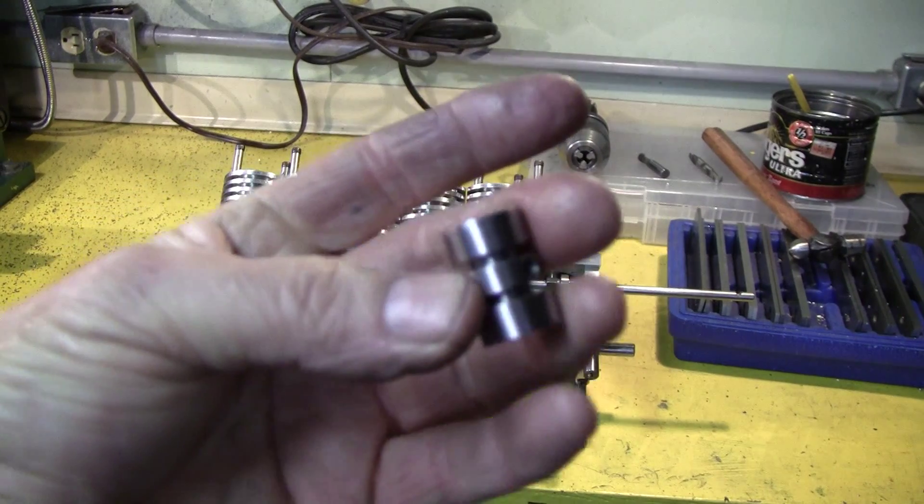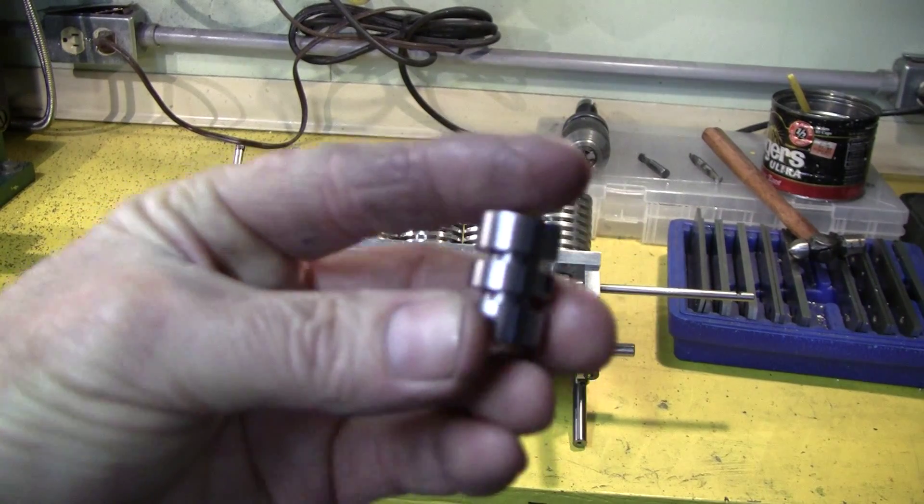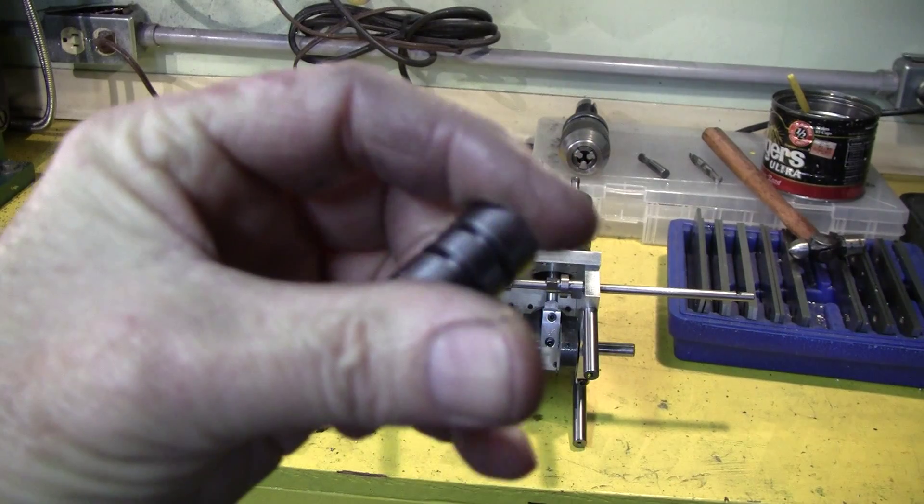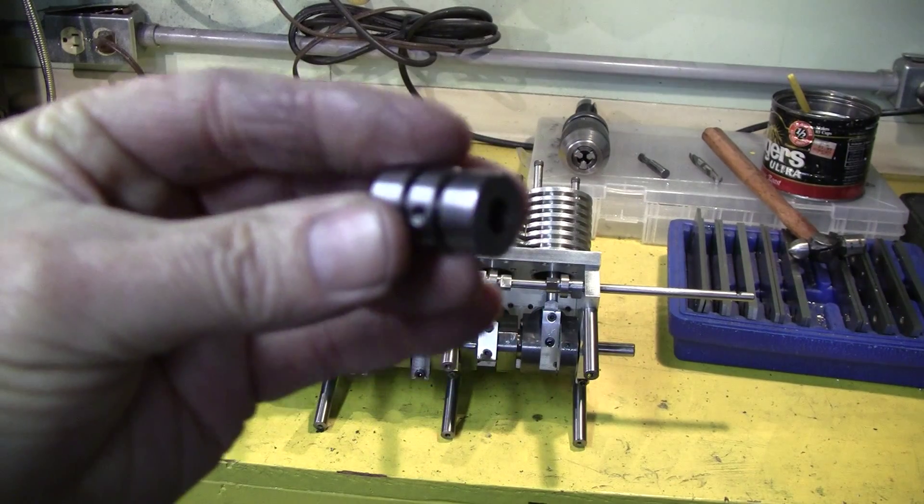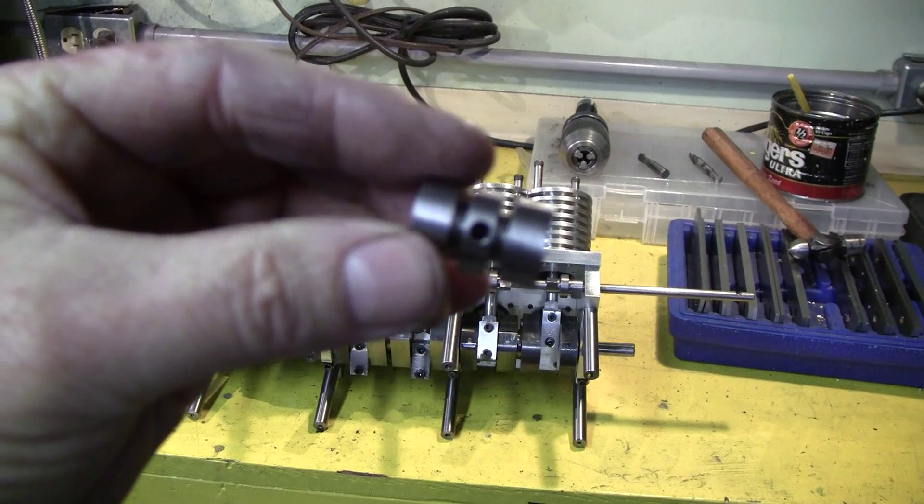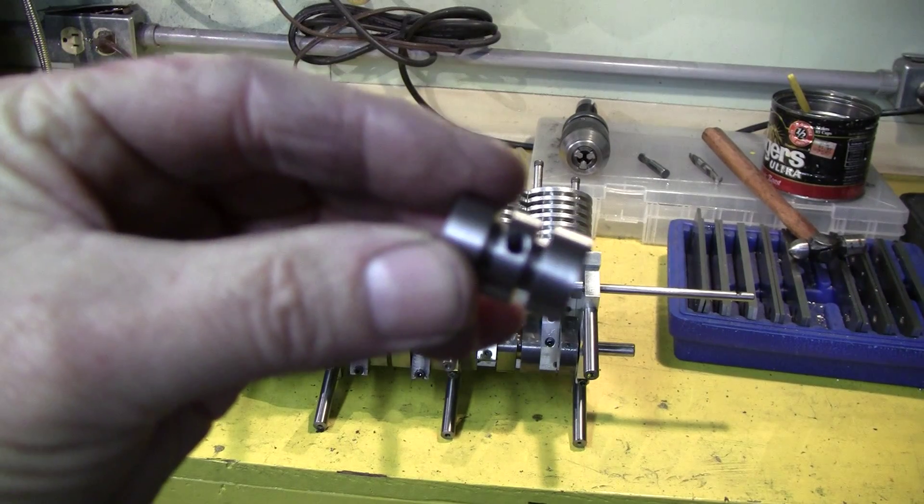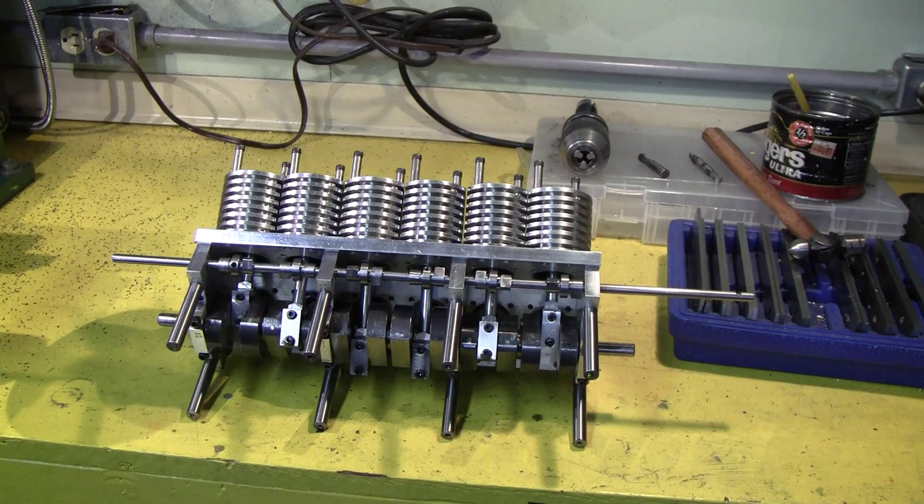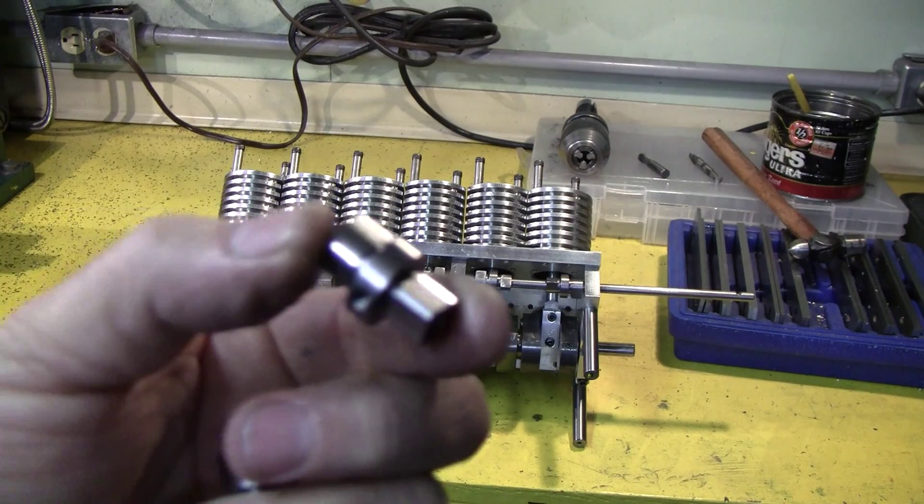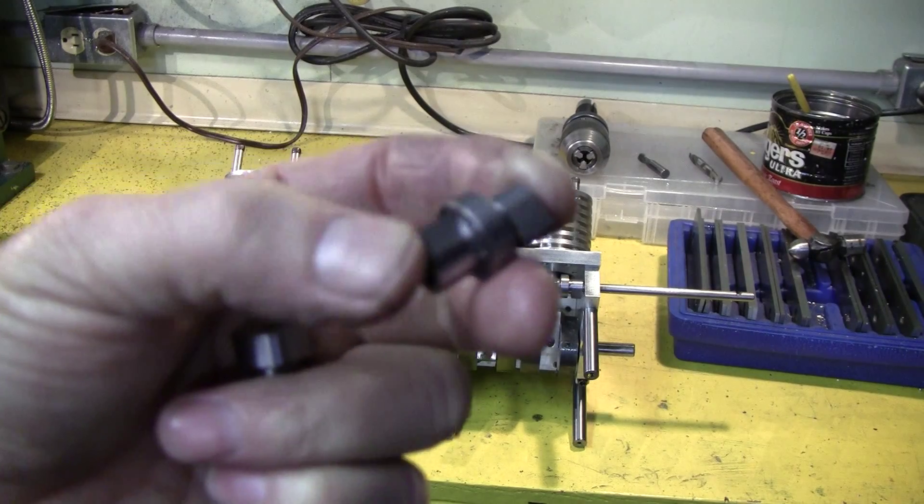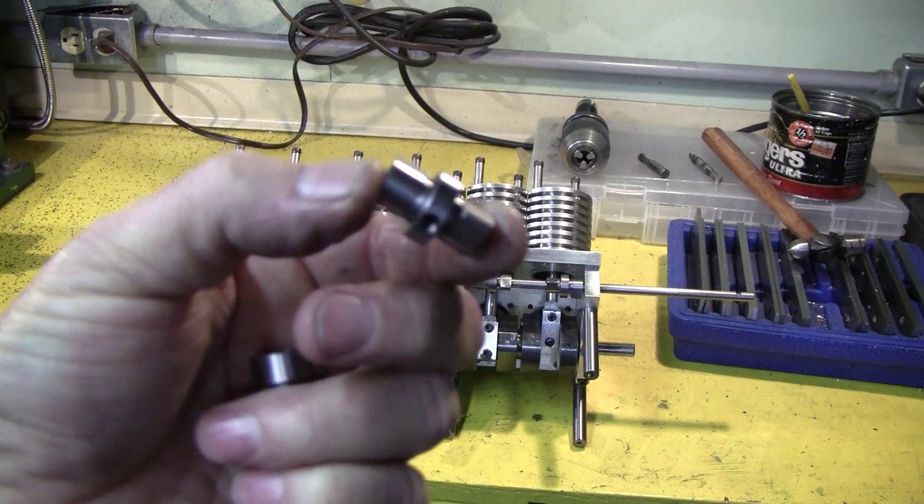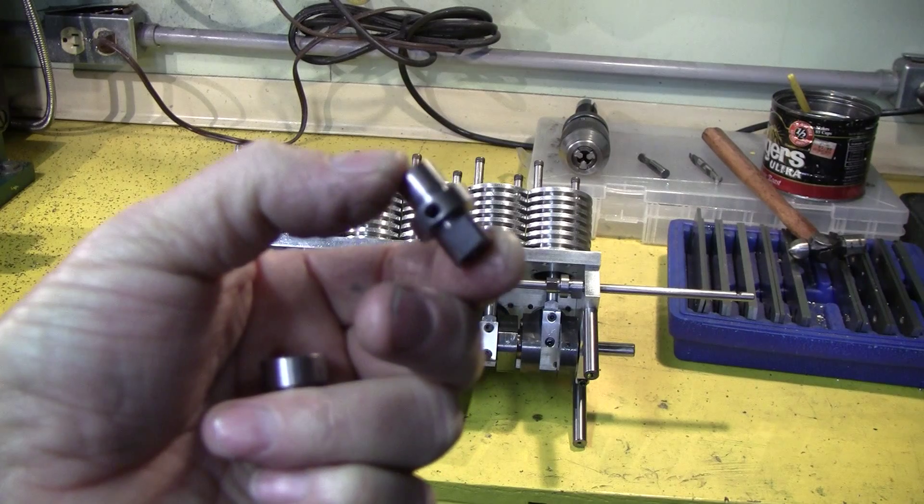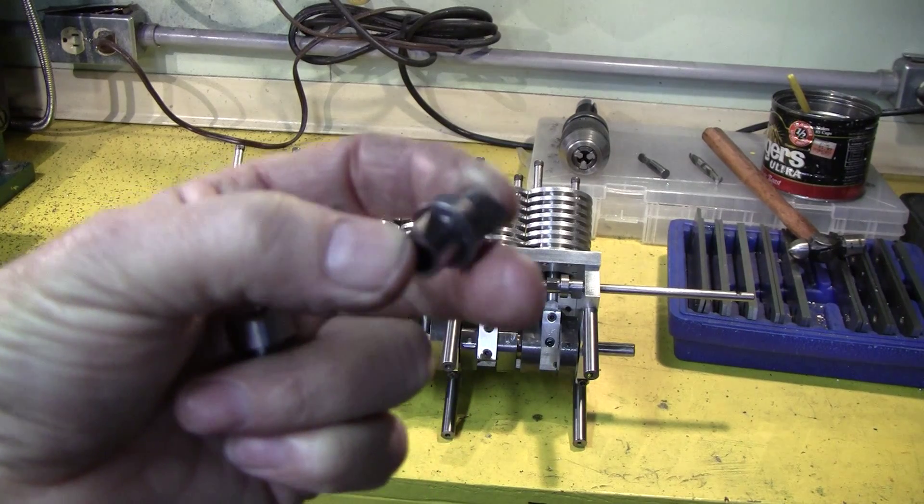Then I drilled and threaded this hole for an 8-32 which will hold it on the camshaft. And here is the final cam that we're going to show you how to make today - intake and exhaust.